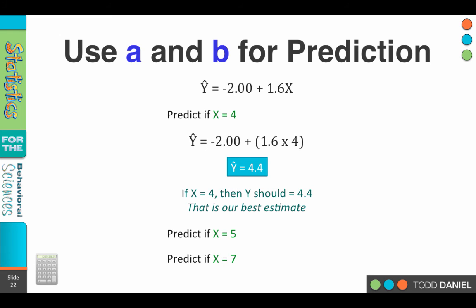All right, welcome back. The predicted value for y, if x equals 5, should be a y of 6, and the predicted value of x equals 7, should be a ŷ of 9.2.